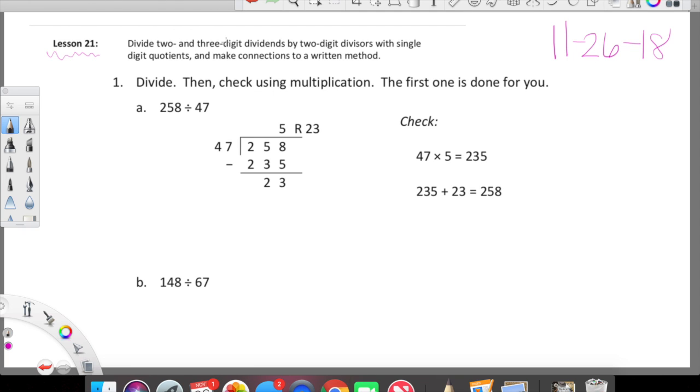Let's look at our target for today: divide two and three-digit dividends by two-digit divisors. Keep in mind our dividends are these monkeys and our divisors are these monkeys with single digit quotients. Quotients are the fancy word for the answer to a division expression, and make connections to a written method.